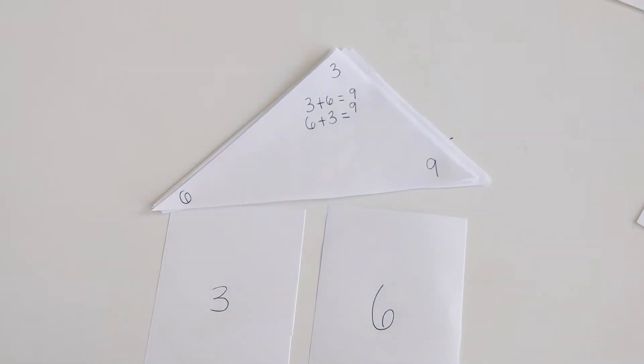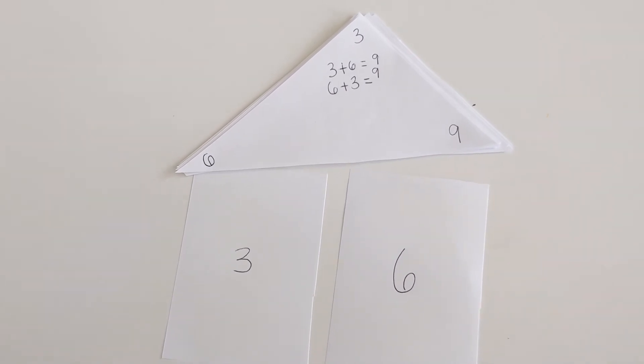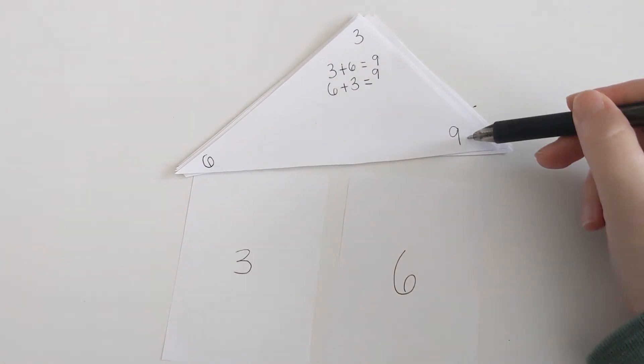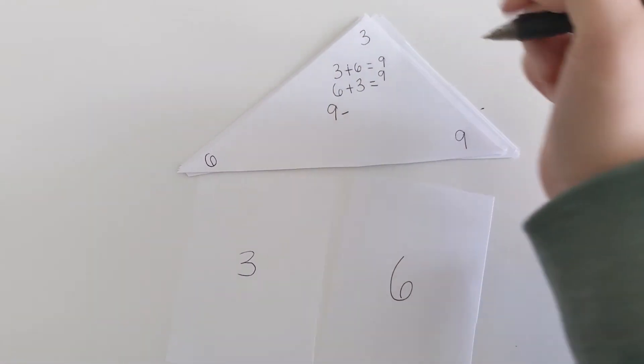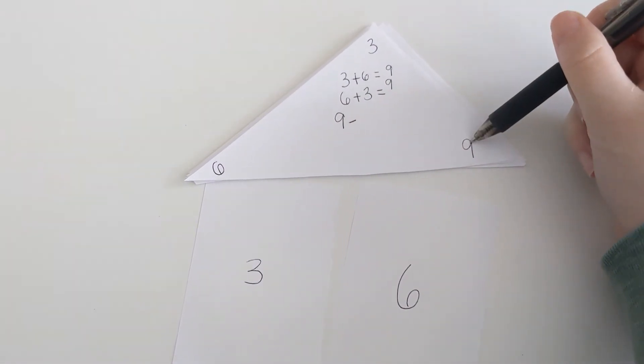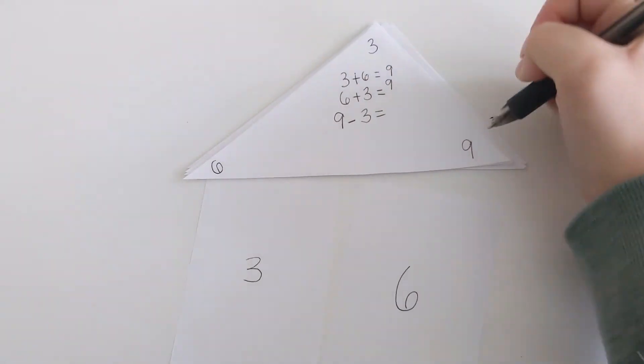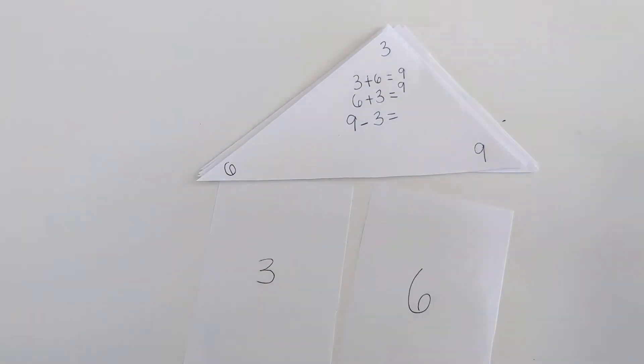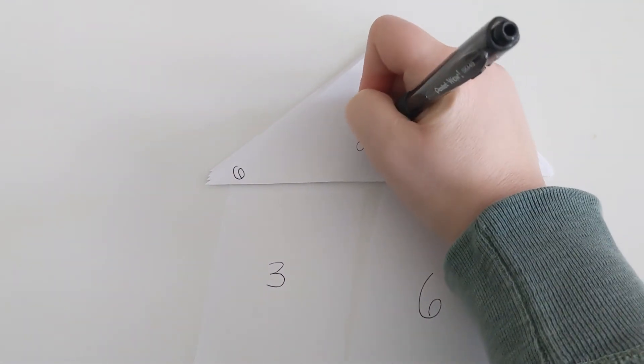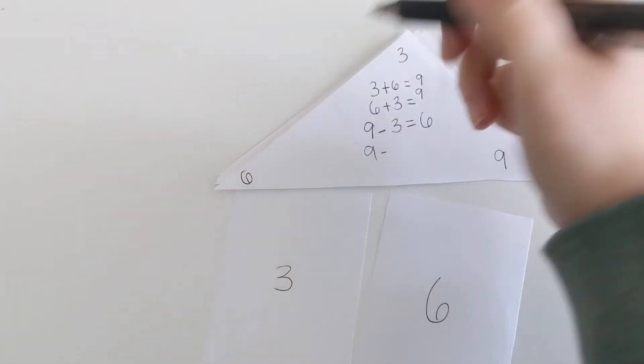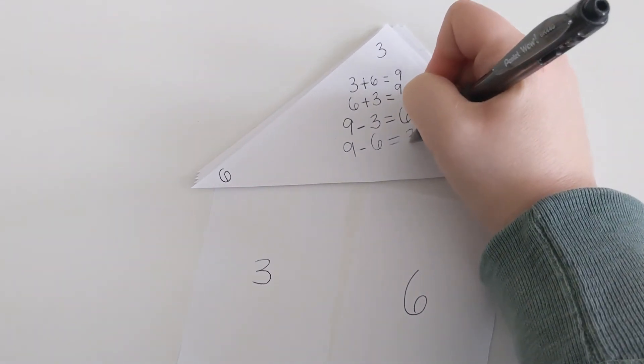Now, if I want to do subtraction, can you remember which number has to come first? Always my biggest number. Number nine is going to come first. Nine minus, well, what if I did three? Nine minus three, guess what? The answer is going to be six. Now I can go nine minus, and the other way I can go nine minus six, and the answer is going to be three.